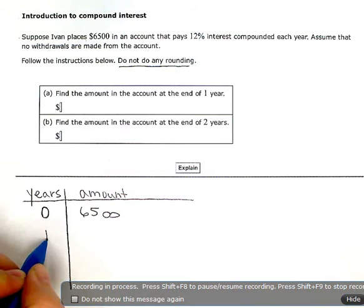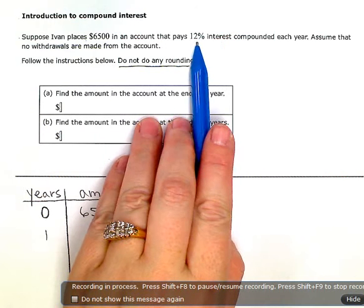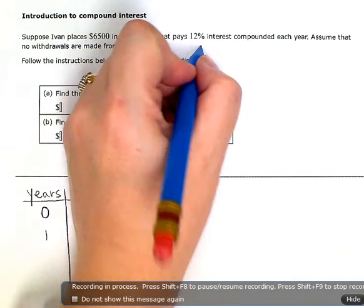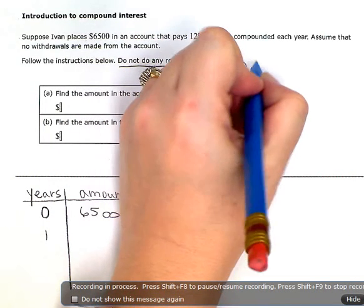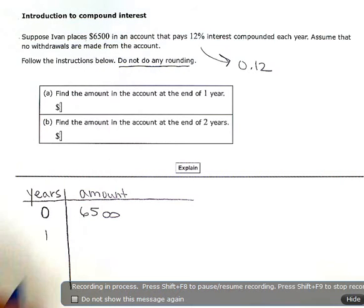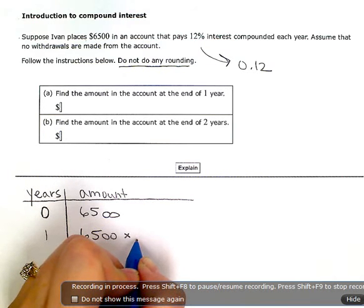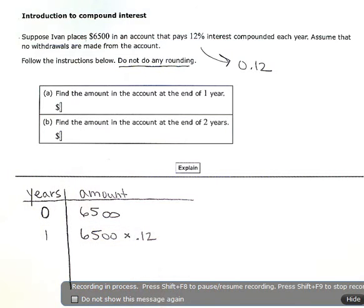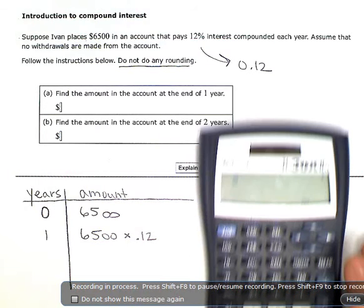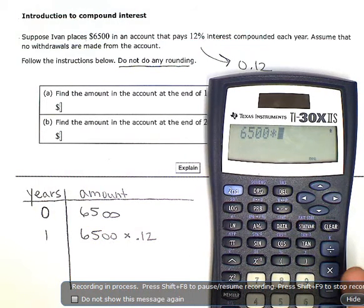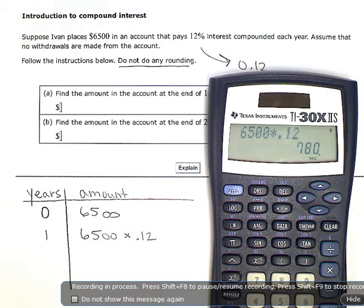Now one year later, I have earned 12% interest. Now 12% as a decimal is 0.12. So I'm going to take my $6,500 here and multiply by 0.12 to figure out how much interest is that actually. So here on my calculator, I'm going to do $6,500 times 0.12, $780. So not too bad. I earned $780 in interest.